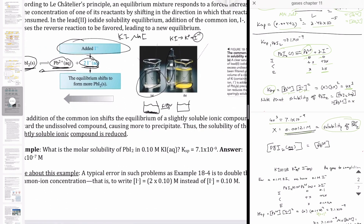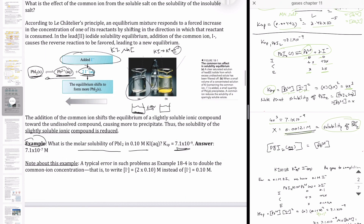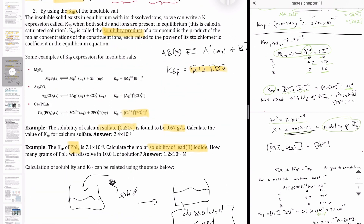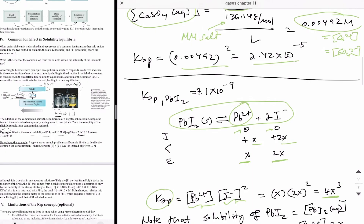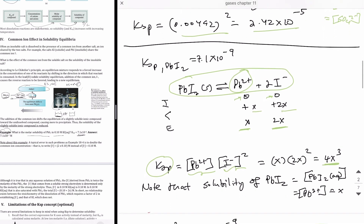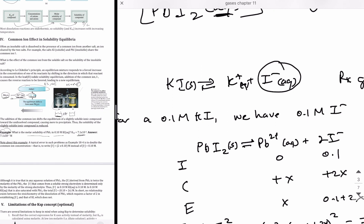We're going to show this with a calculation using this example: what is the molar solubility of lead iodide in 0.1 molar KI? Now you have some iodide already present from the KI. The Ksp is given. For comparison, the previous problem asked for solubility of PbI₂ in just water, and the answer was 1.21 × 10⁻³ M. The calculation is the same as before, except now there's iodide already produced by the potassium iodide.